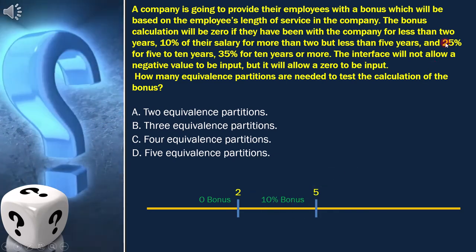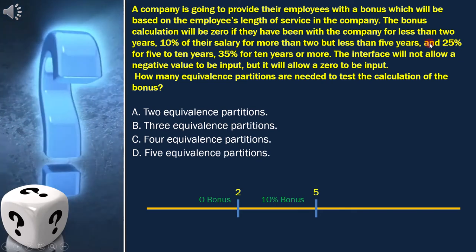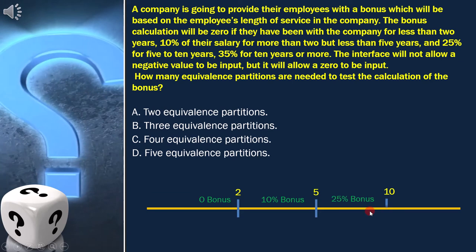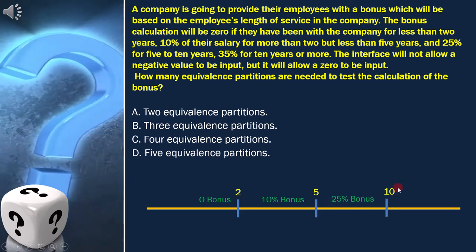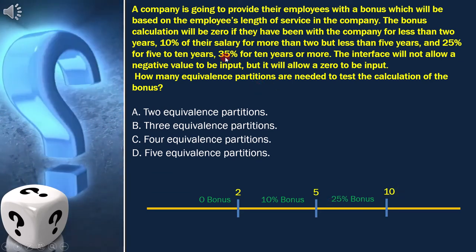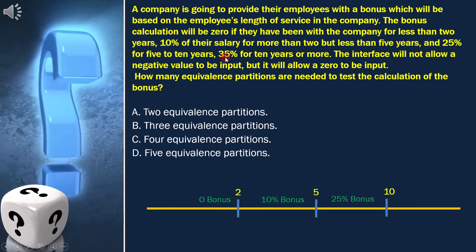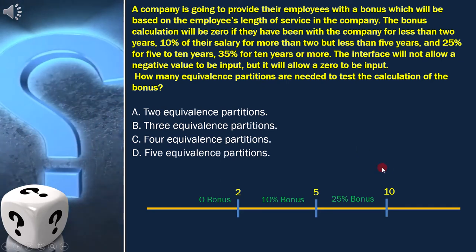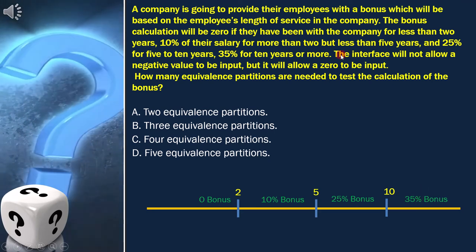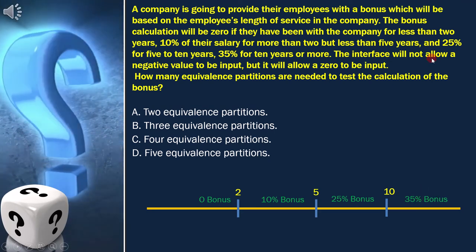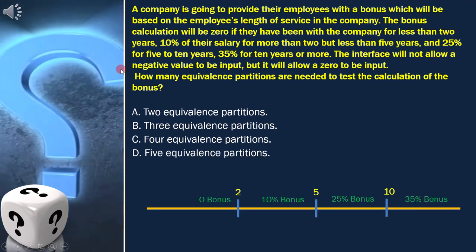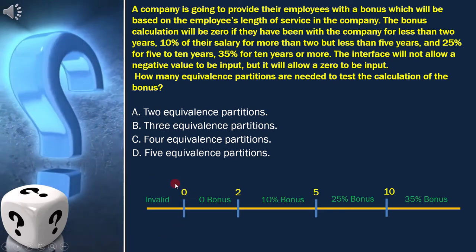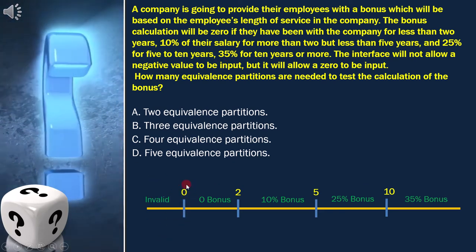The third condition is 25% for five to ten years. That means ten is the next boundary. The fourth condition is 35% for ten years or more. The fifth condition is: the interface will not allow a negative value to be input. That means zero is one of the boundaries too.